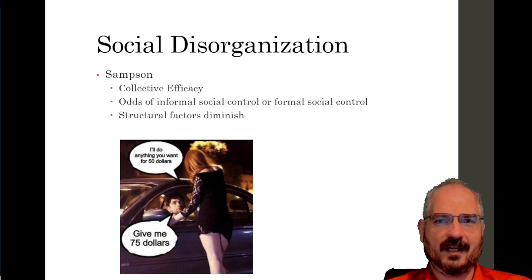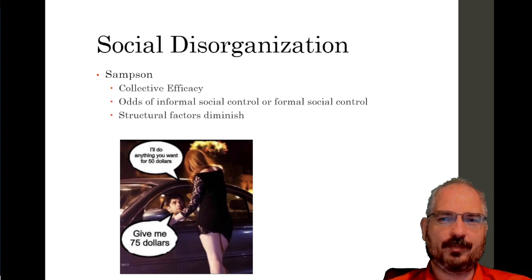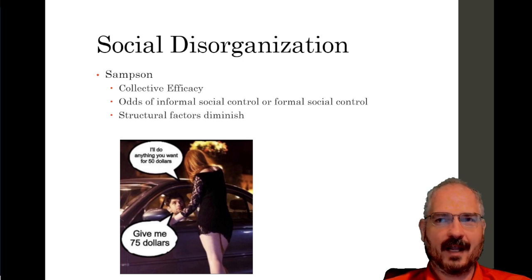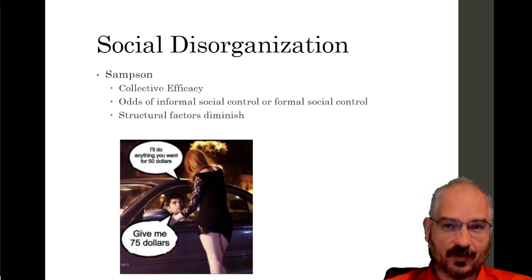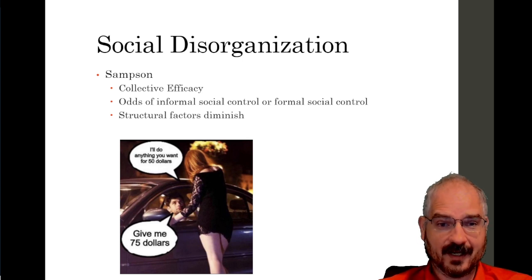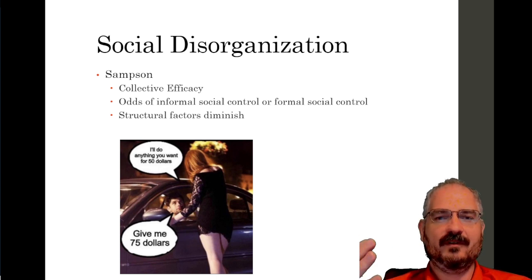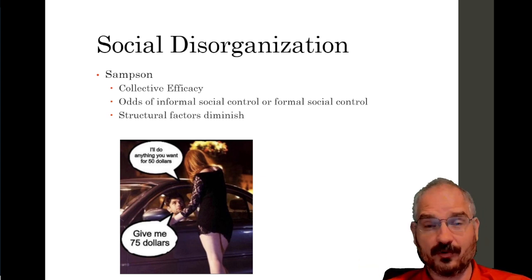In other words, if something happens in a neighborhood, what are the odds that residents will engage those informal social controls — trying to prevent criminal or deviant acts using non-legal means? Or what is their ability or desire to enact formal social controls, i.e., call the police? High collective efficacy means neighborhoods have more informal social controls and a higher likelihood of engaging formal social controls.